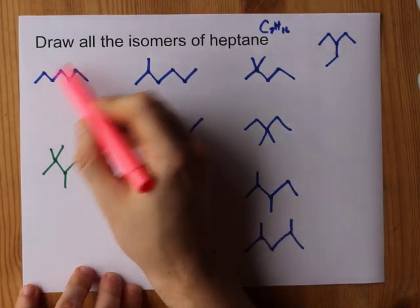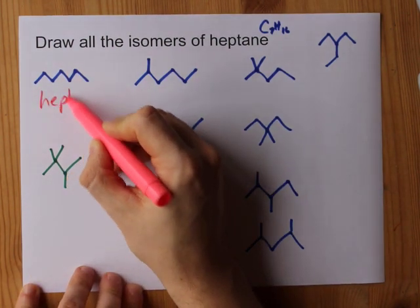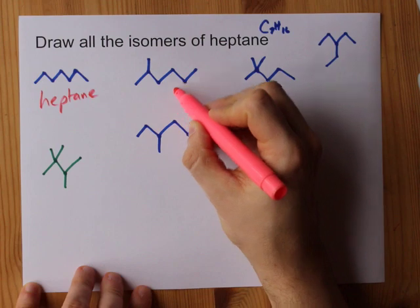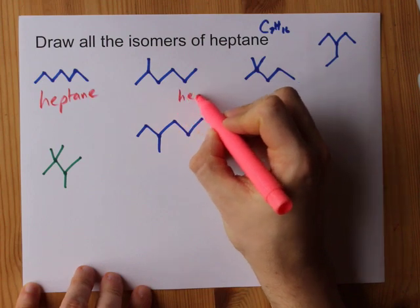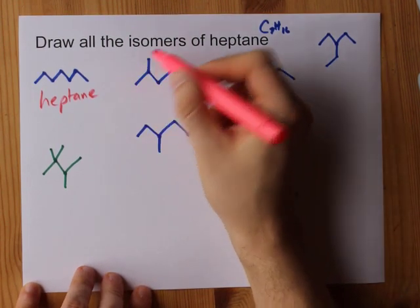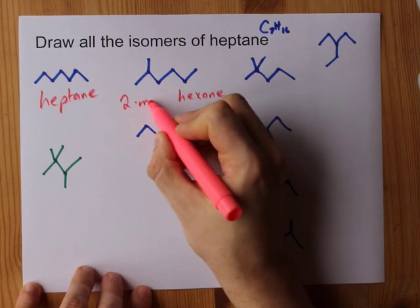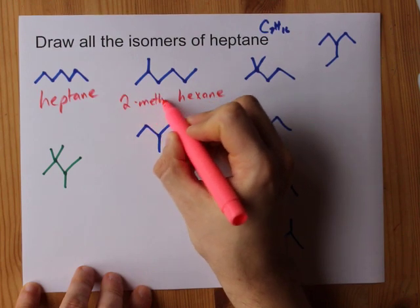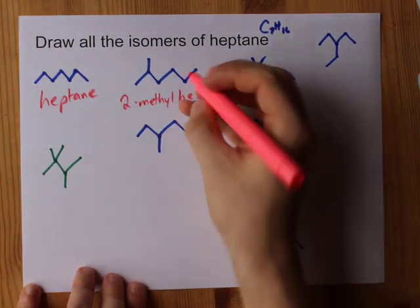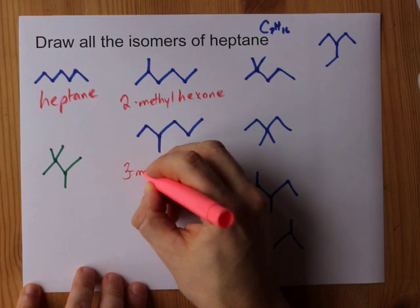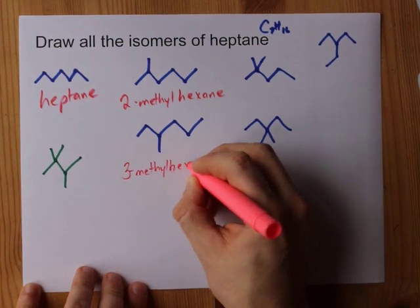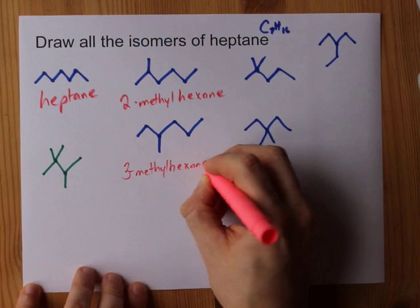Now I'm going to name them all. This is 7 in a row — people call that heptane. These are 6 carbons long: it is hexane with a methyl group on carbon 2, making it 2-methylhexane, all one word. This is the same but with the methyl group on carbon 3, so it's 3-methylhexane.